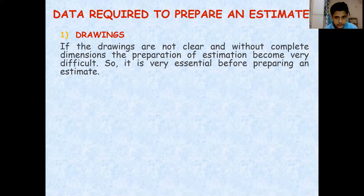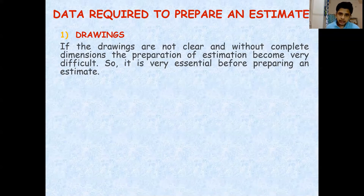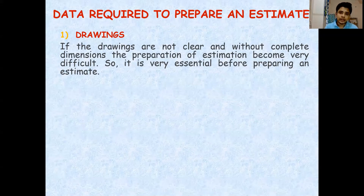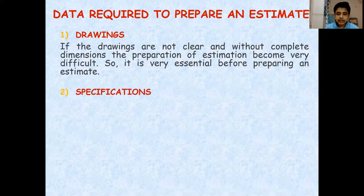From the drawings we take out the length, breadth, and height, and we find out the volume of work. Then we proceed to find out the requirement of materials, and multiply the quantity of materials by the rates to get the cost.